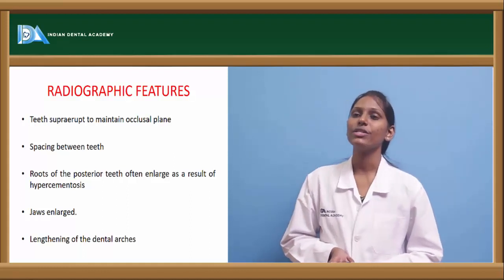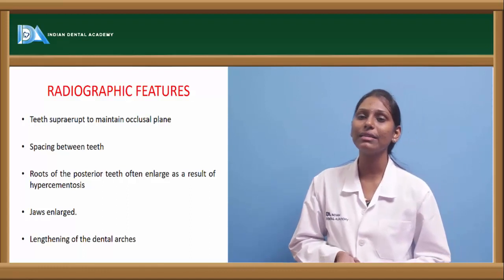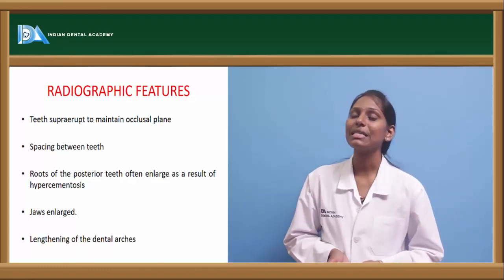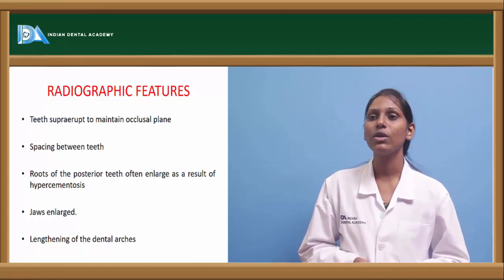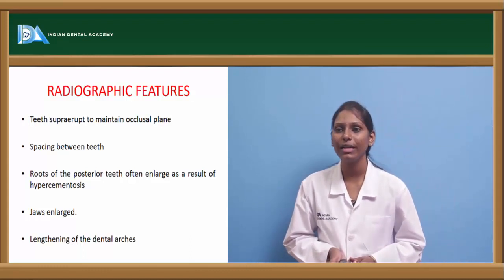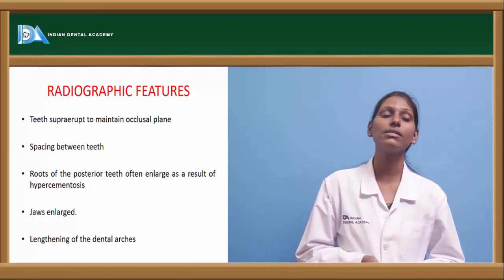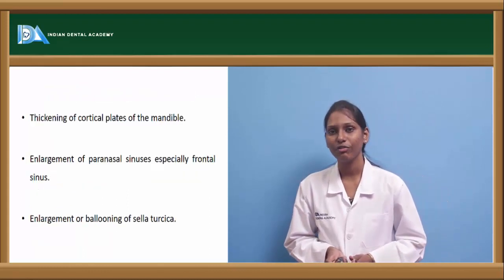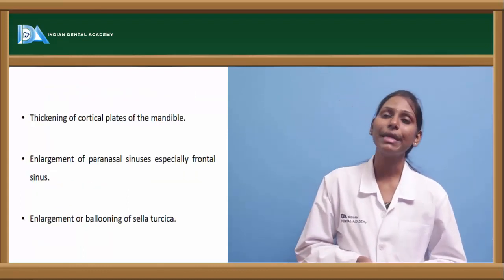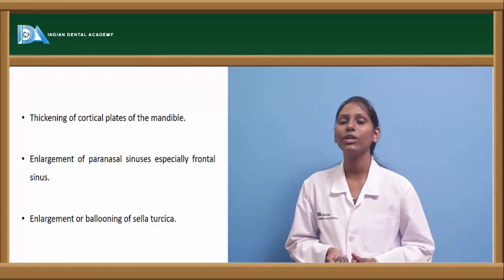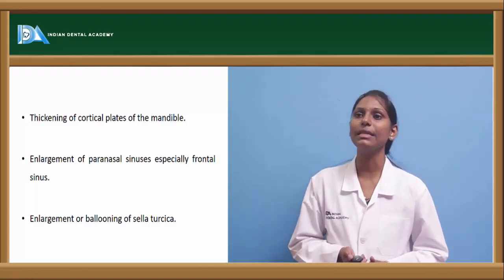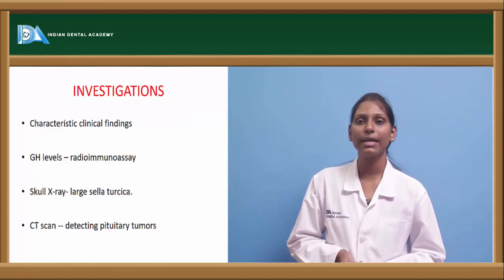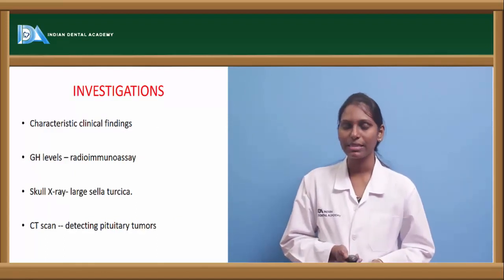Radiographic features of acromegaly include supra-eruption of teeth to maintain the occlusal plane, spacing between teeth, enlargement of roots of posterior teeth due to hypercementosis, enlarged jaws with lengthening of dental arches, thickening of cortical plates of the mandible, ballooning of sella turcica, and enlargement of paranasal sinuses especially the frontal sinus.